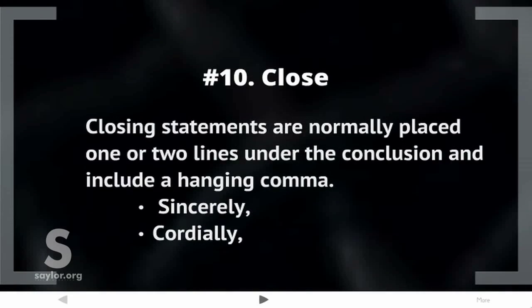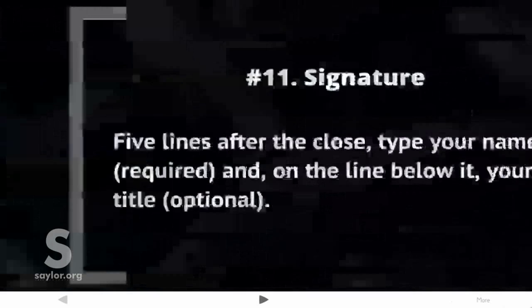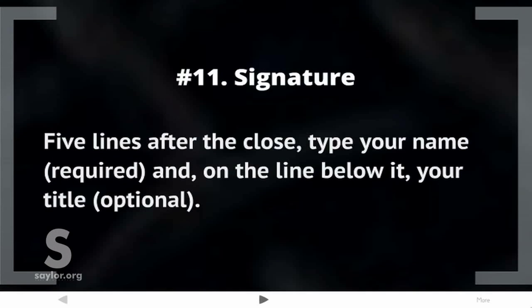Element ten: Close. Closing statements are normally placed one or two lines under the conclusion and include a hanging comma — for example, 'Sincerely,' or 'Cordially.' Element eleven: Signature. Five lines after the close, type your name — this is required — and on the line below it, your title, which is optional.